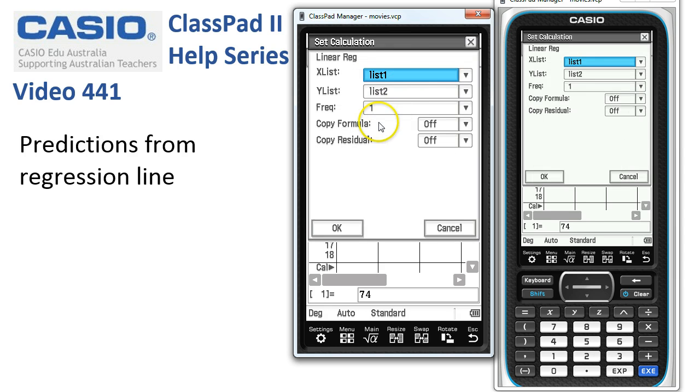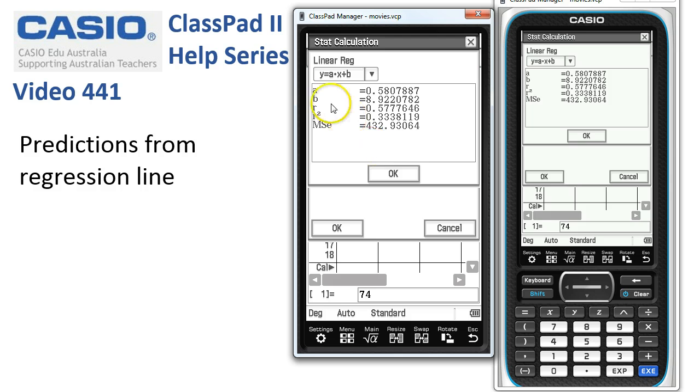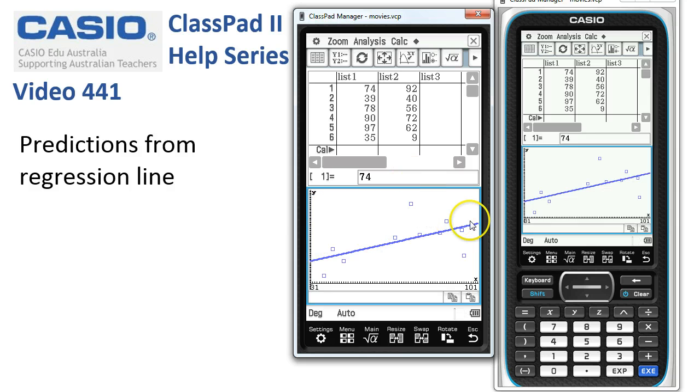But this time I'm going to copy the formula into Y1. Now Y1 is one of the graph entry boxes in Graph and Table. So when I tap OK now, we see the same screen. Here's the equation of the regression line, and again ClassPad draws it in.